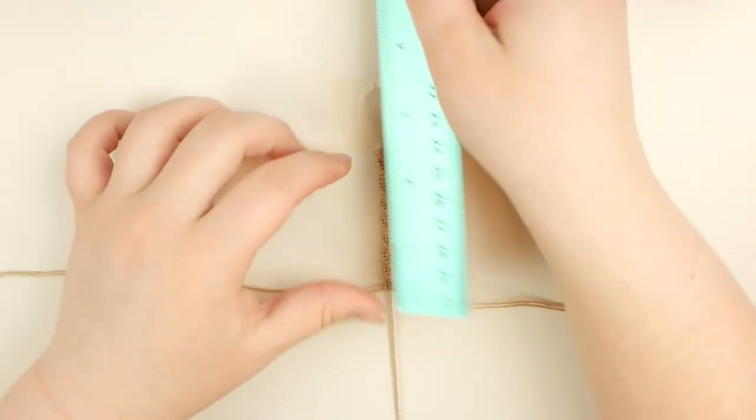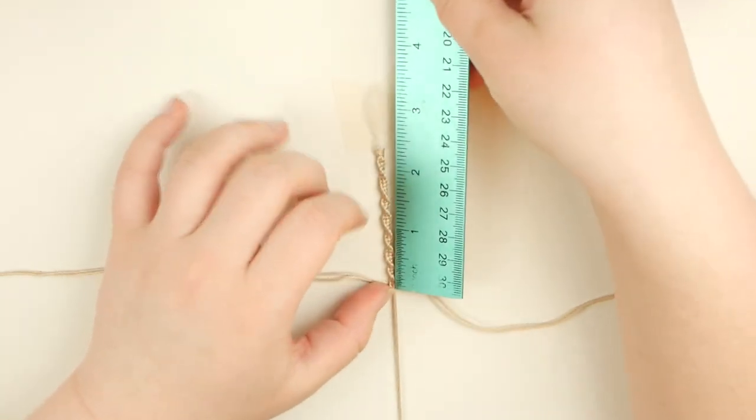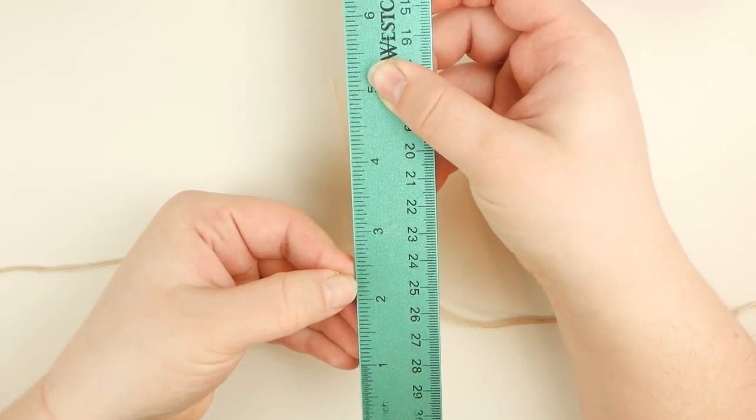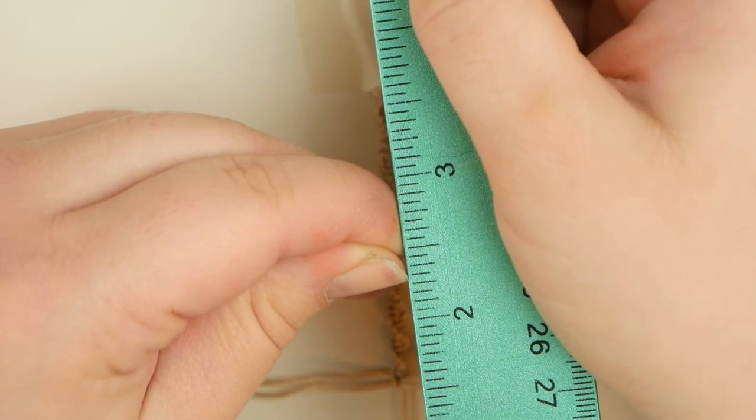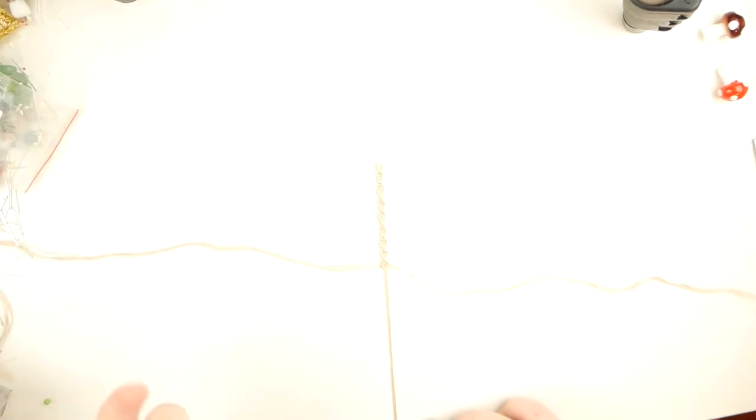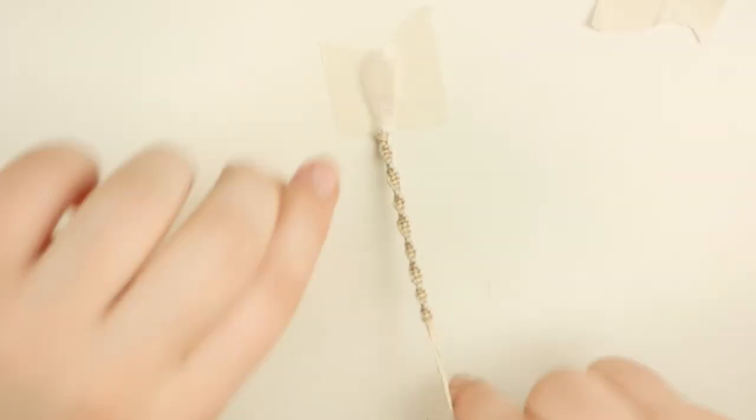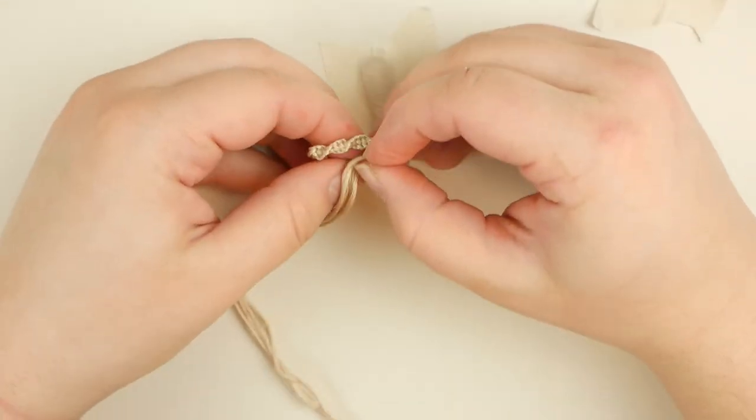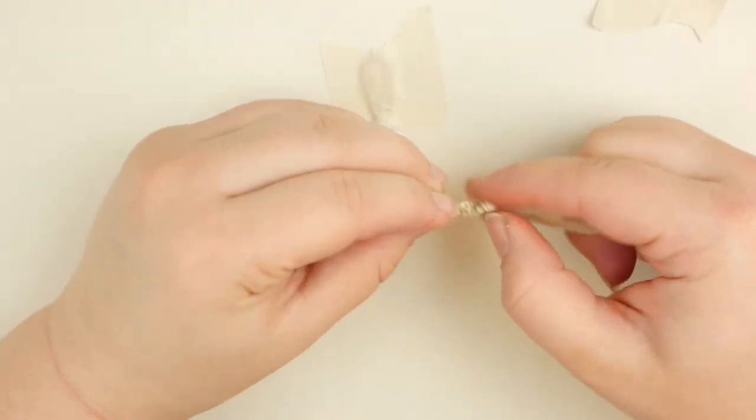Okay, so when we measure this, it's now measuring to about this line, to about there, so it's right before that two-and-a-half mark. So, I'm going to take the tape off of this bottom string here, and then I'm going to bring these all together, and then I'm going to make a knot, pretty much like what you would do at the end of your bracelet.